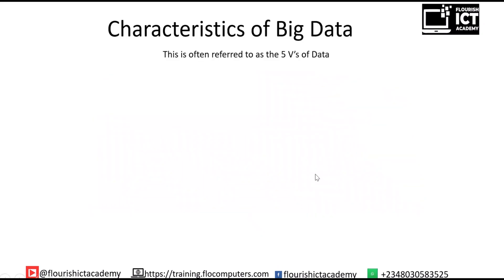Now let's turn our attention to the characteristics of big data, often referred to as the five Vs of data. Based on the enormous amount of data generated from different sources — Facebook and others — this has led to the evolution of big data. This data that we now have, categorized as big data, also comes with its own challenges. The first V is volume — we're talking about the size of the data. How big is the data being generated? Data comes from social media platforms, networks, call logs, and different platforms every day, resulting in the bigness of data today.